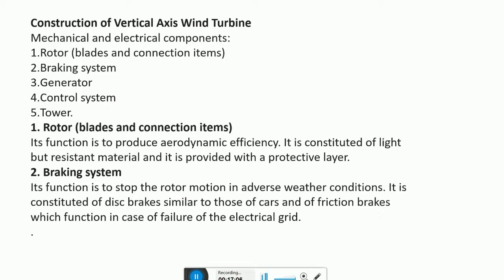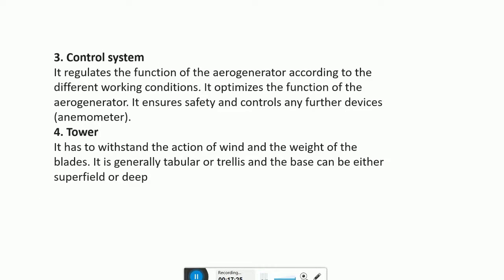The function of the braking system is to stop the rotor motion in adverse weather conditions. It is constituted of disc brakes similar to those of cars, and friction brakes which function in case of failure of the electrical grid. The control system regulates the function of the aero generator according to different braking conditions, optimizes its function, ensures safety, and controls any further devices such as the anemometer.